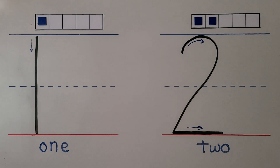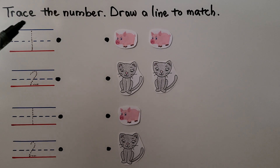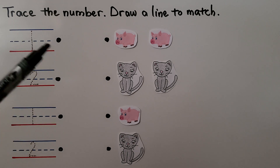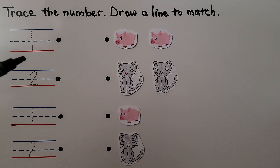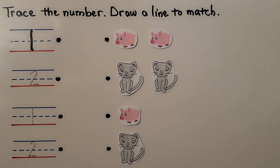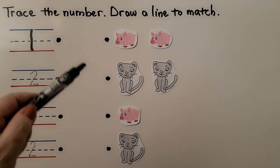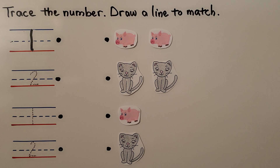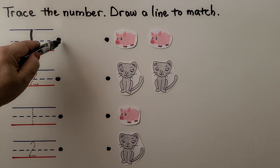Can you trace them on your own? Here it's telling us to trace the number. See the dotted line? We have to trace that, and then once we trace all the numbers, we need to draw a line to match that number to the number of animals. Here we have number 1. We start at the top and go straight down to the bottom line. Do you see one animal we could draw a line to? I see one pig and I see one cat, so we can draw it to either one. We can draw a line to the pig. That's 1 pig.